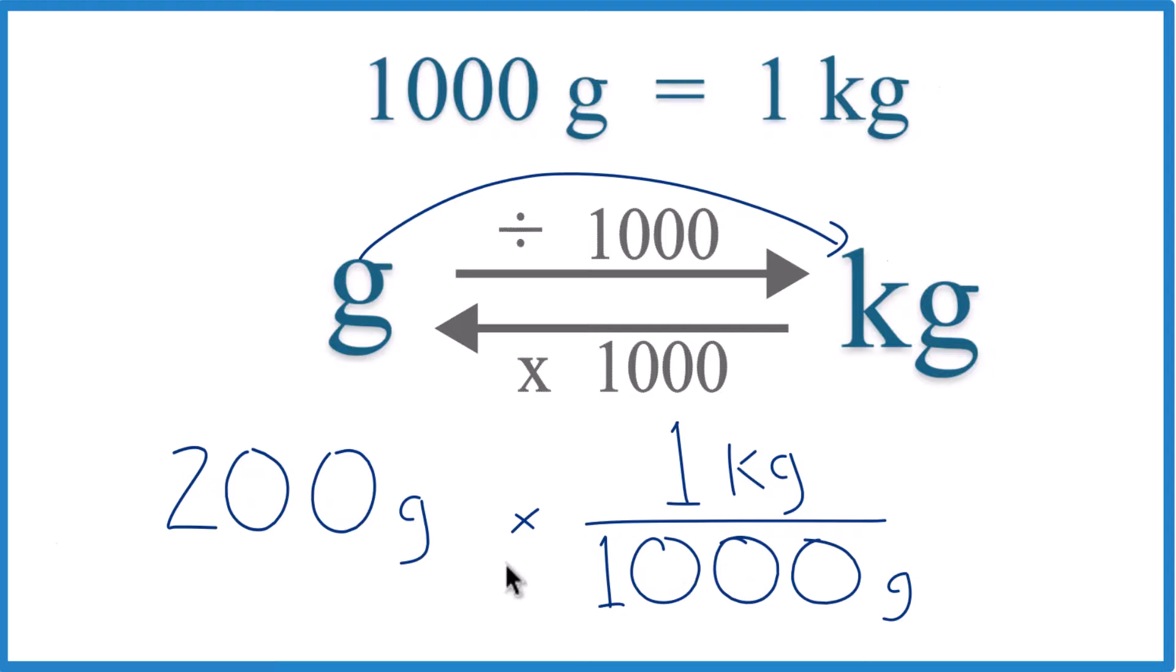We have grams on the top and the bottom. They cancel out. 200 times one kilogram, that's 200 kilograms. We divide by 1,000. We get 0.2 kilograms. Same as we got before.